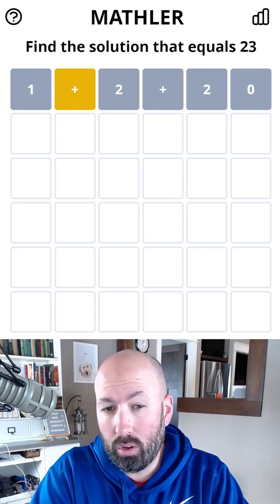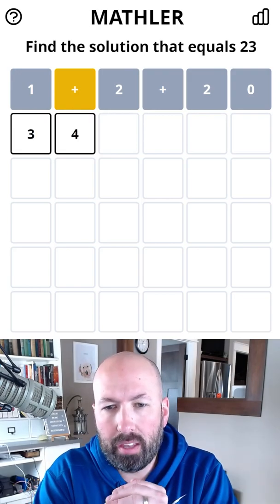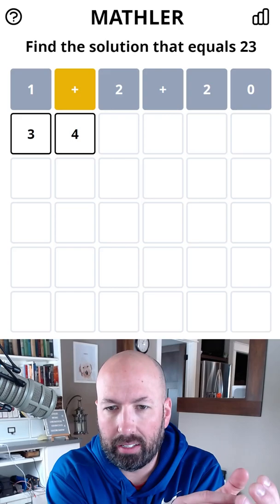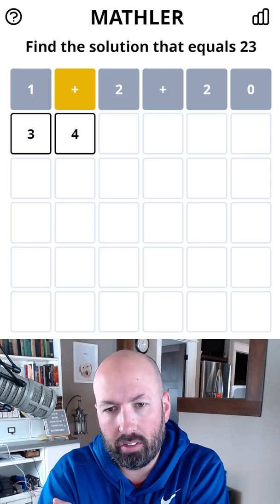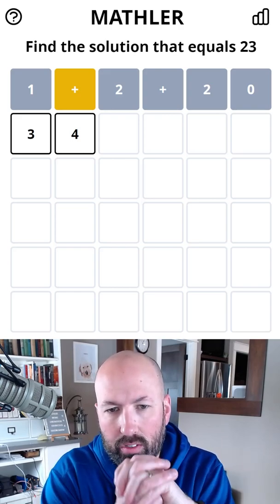So there's no 0, 1, or 2. With the sum, that means part of it has to be less than 23, and then we're adding something to get up to 23, but we can't use a 0, 1, or 2.